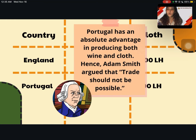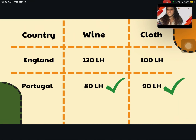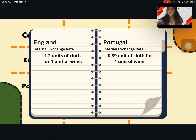Hence, Adam Smith argued that trade should not be possible. However, from Ricardo's perspective, we can see that Portugal has more of an advantage in producing wine than in producing cloth. Hence, Portugal should produce wine and leave cloth for England. If England produces wine and cloth, the internal exchange rate would be 1.2 units of cloth for 1 unit of wine. And in Portugal, the internal rate of trade would be 0.89 units of cloth for 1 unit of wine, because the cloth makers are working harder, so they will pay less cloth for 1 unit of wine.